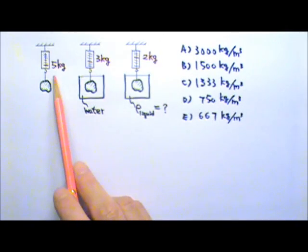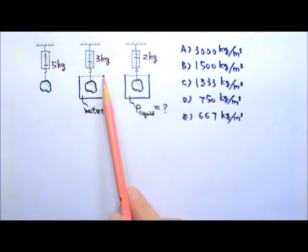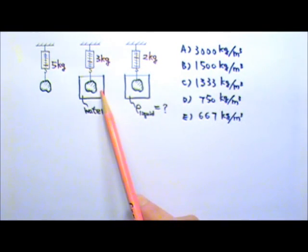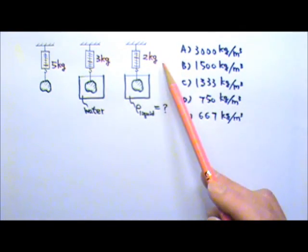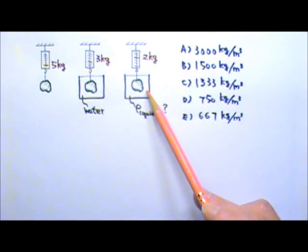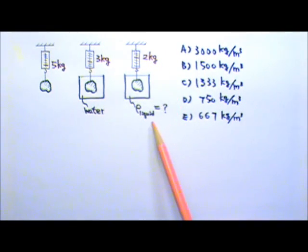A new problem: the scale reads 5 kg when a rock is hung under it. When the rock is lowered so it is completely submerged under water, the scale reads 3 kg. When the rock is lowered into an unknown liquid, the scale reads 2 kg. What is the density of this unknown liquid?